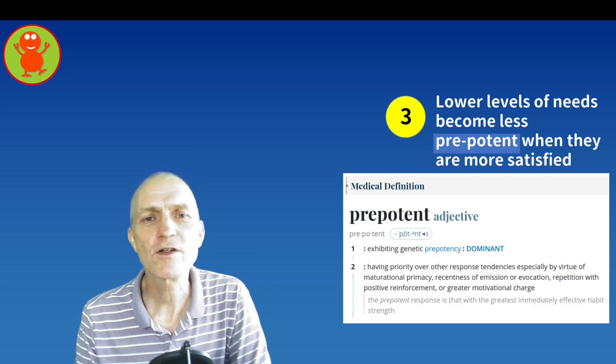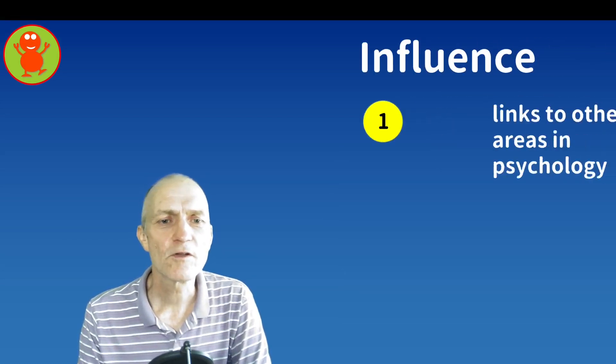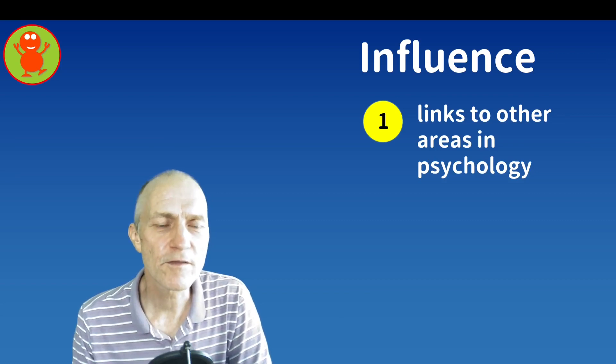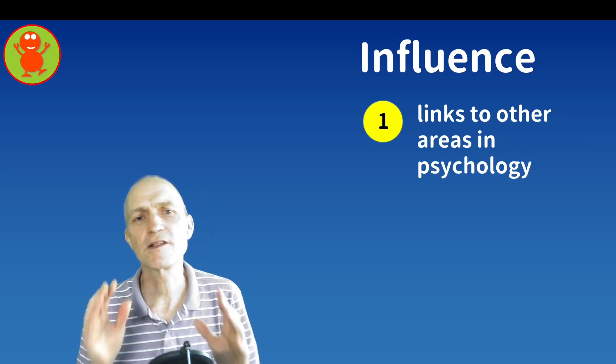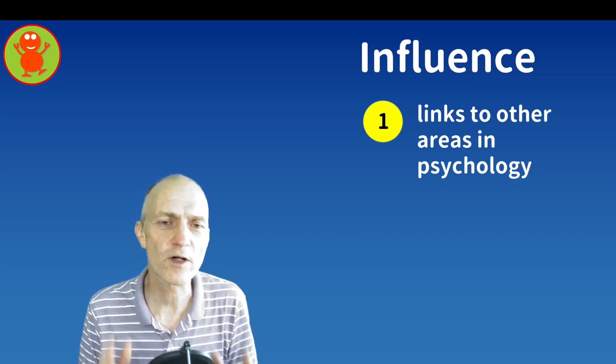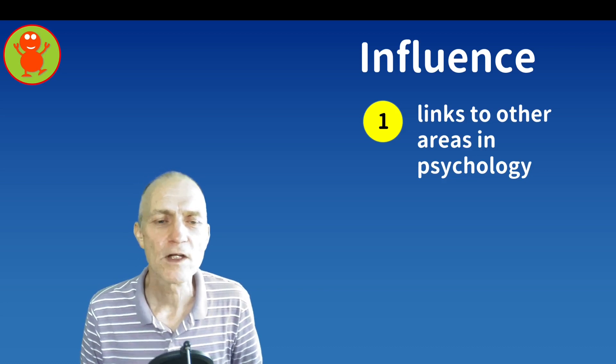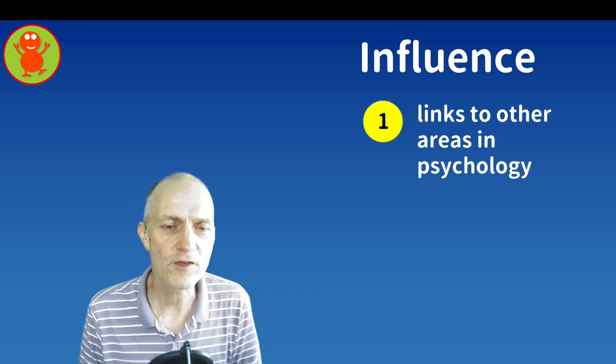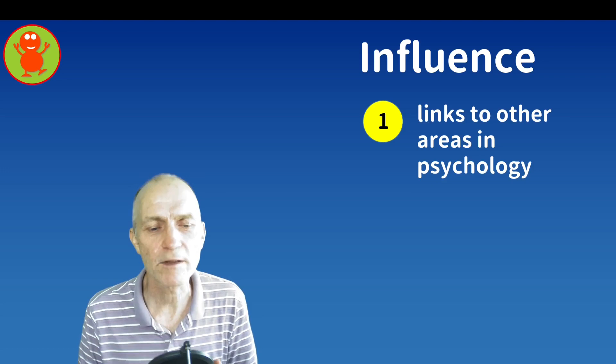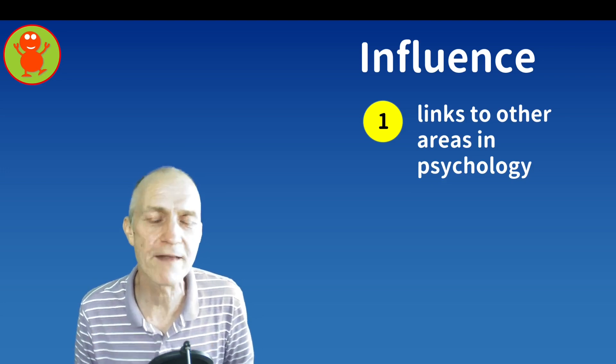Now I want to talk about the influence this paper has had. First of all, it's a very broad theory, right? So it has lots of links to other areas of psychology because it's about something so fundamental - needs and motivation. It certainly links to developmental psychology because people develop, for example self-actualization certainly has a developmental component.